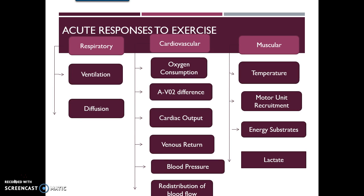This page shows a quick summary of the acute responses that occur in each system. In the respiratory system, we see changes in ventilation and diffusion. In the cardiovascular system, we see changes in oxygen consumption, AVO2 difference, cardiac output, venous return, blood pressure, and redistribution of blood flow. In the muscular system, we see changes in body temperature, motor recruitment, energy substrate levels, and lactate.